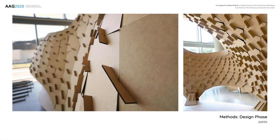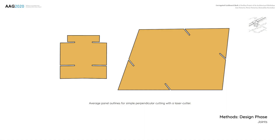A traditional cross-halving joint used in this manner results in an angular cut through the material thickness, due to the inherent geometrical properties of a double curved surface. But in this project, because of the two main constraints — the thin sheet cardboard and a simple laser cutter — an approximation for a two-dimensional cut was needed. To exploit the potential of friction within the joint, the offset tolerances for depth and width of the cuts had to be defined through thorough physical trials. The critical aspect was the precise material burn parameter using specific laser cutter settings, checked and adjusted before each cutting segment, to ensure fast and precise insertion while providing enough friction to stabilize the structure during assembly.